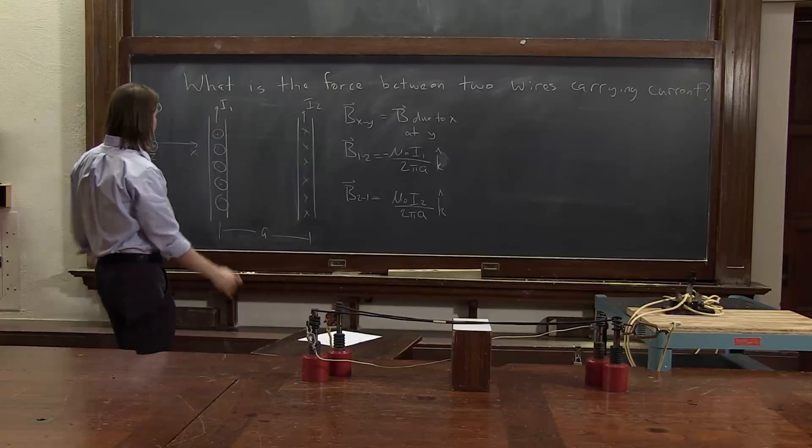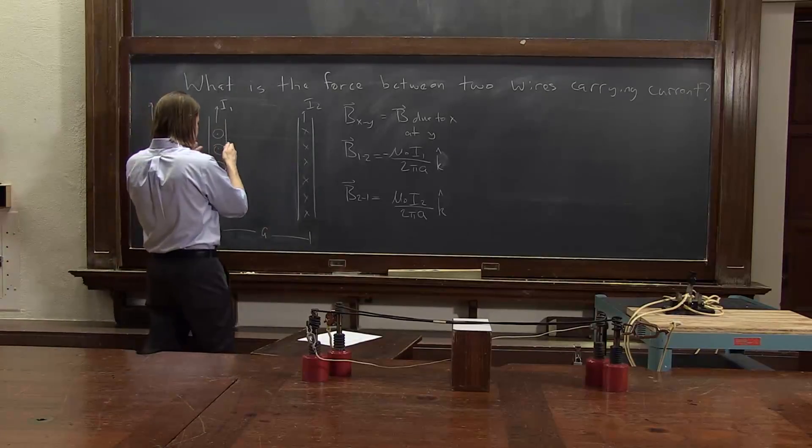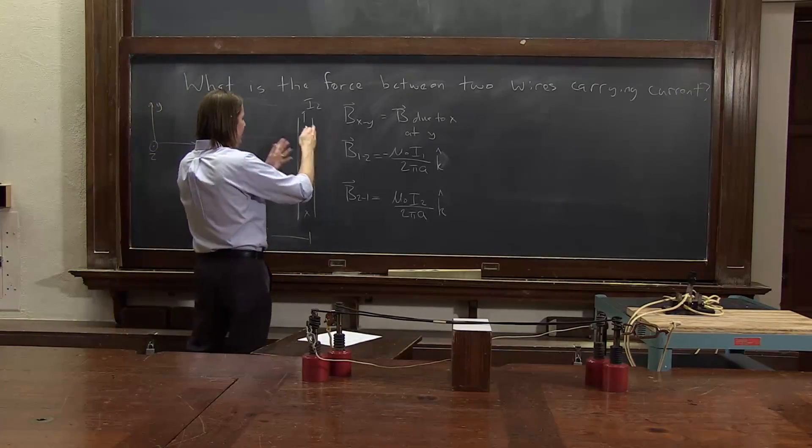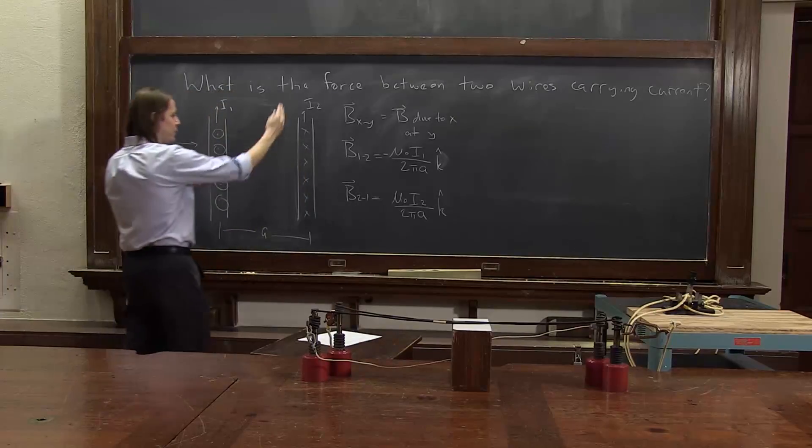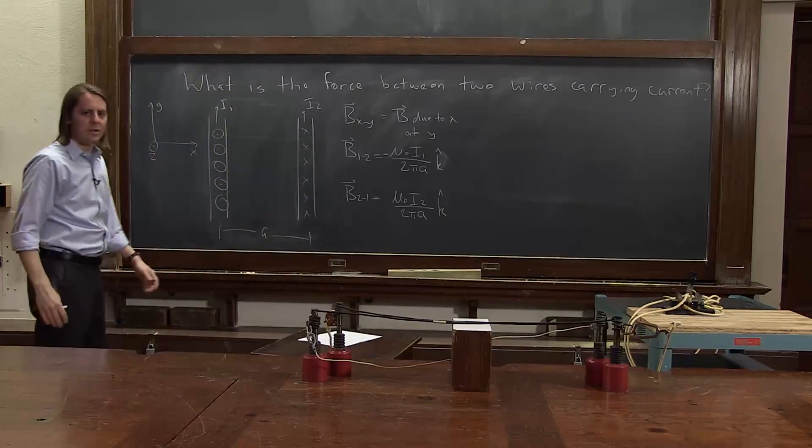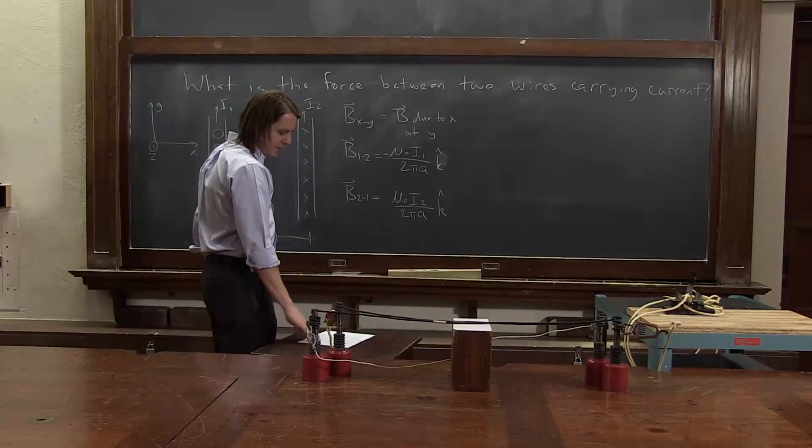Now it's really more complicated throughout space. Here this one is pointing in hard. It's a big magnitude close, and it decays away, and this one points out with a big magnitude, decays away. Lots of stuff is happening, but at the actual position, we've calculated the magnetic fields.